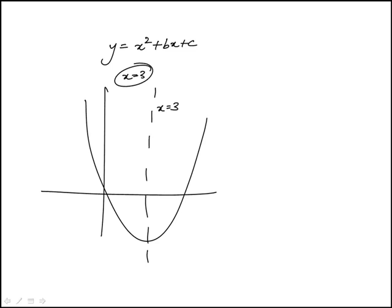And we're told that it passes through the point (5, 2). Question is, what is the value of c?